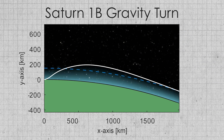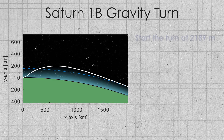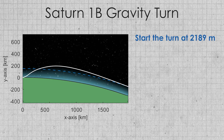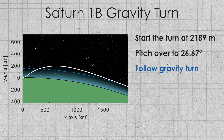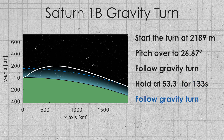The perfect trajectory for a Saturn 1b is to start your gravity turn at a staggering 2,189 meters, and initially pitch over to 26.67 degrees. You then wait for your velocity vector to align with your rocket's body and start following it smoothly until you reach 53.3 degrees. You then stop pitching and lock your angle for 133 seconds. After this, you snap back to wherever your velocity vector has ended up, follow it all the way into space, burn your second stage for an extra seven seconds or so after you run out of fuel, and then you are in an approximately circular 152-kilometer orbit.